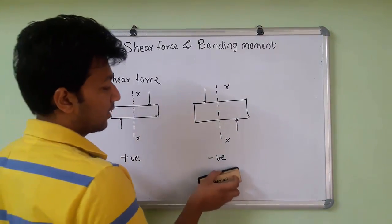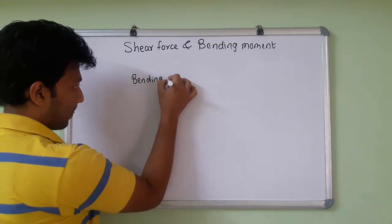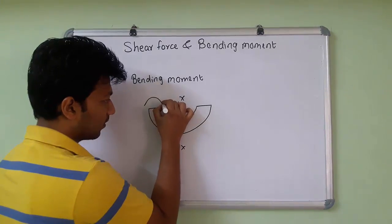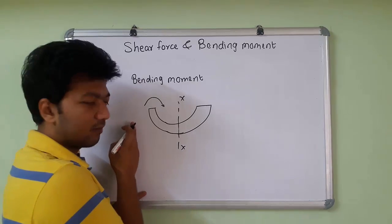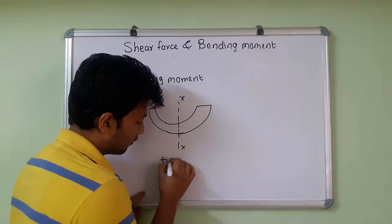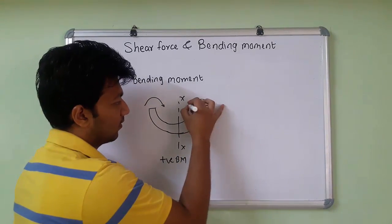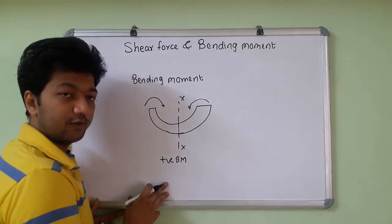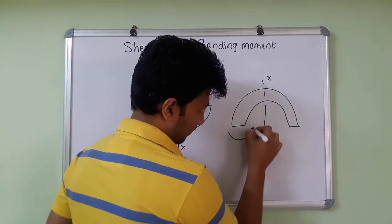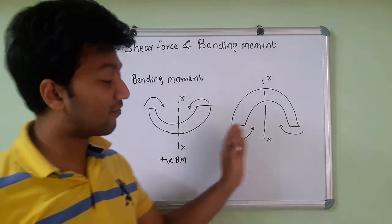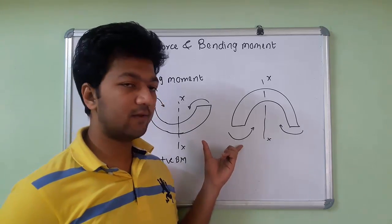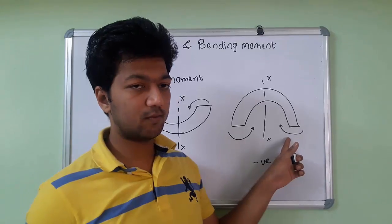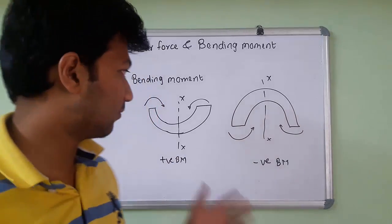Now we understand what is the sign convention for the bending moment. Here again we have to consider the section XX. If we move from left to right, clockwise will be the positive bending moment and anticlockwise will be negative. If we move from right to left, anticlockwise is also considered positive. If the moment is anticlockwise when moving left to right, we consider it as a negative bending moment.